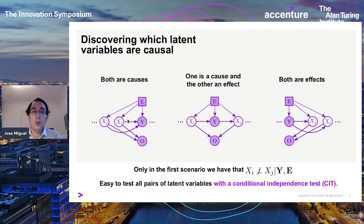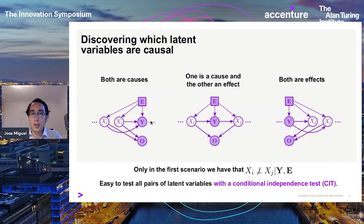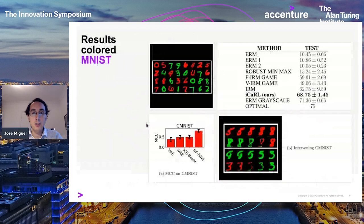It turns out that only in the case where both variables are causes does conditioning on Y make the two variables become dependent. This is analogous to summing two numbers A and B to get C: if you know the sum C and one of the numbers, you immediately know the other. Conditioning on Y introduces dependence, so we can do tests for conditional dependence to find which latent variables are causal.